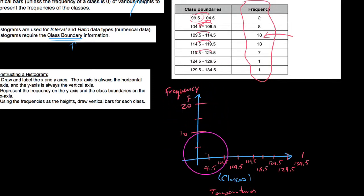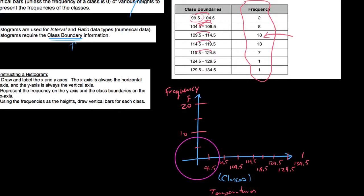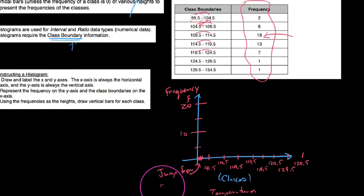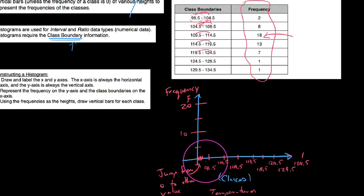A couple of important things to note. We went from 0 up to 99.5 on our x-axis, so it is actually a gradable offense if you don't address this. We usually put in a squiggly mark here to denote a jump — a jump from 0 to another value. If we were going up by increments of 5 but jumping 99.5 from zero, we put a squiggle in there to denote that we're jumping up to this value.